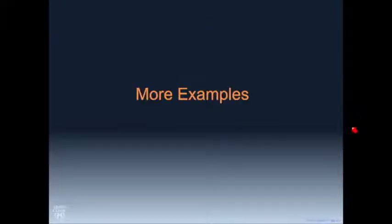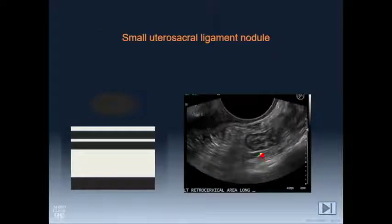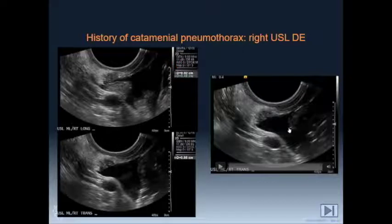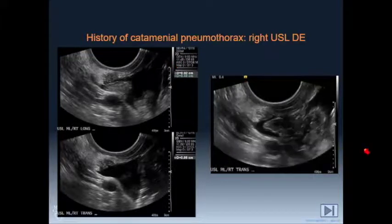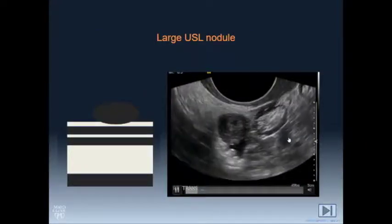I want to show as many examples as I can, because it's one thing to know how to do it, but if you don't know what it looks like it doesn't really help. We sometimes see superficial endometriosis, particularly if there's free fluid — the specificity of this sort of lesion is very high but the sensitivity is low. Here's another small nodule of the utero-sacral ligament — again, high specificity, relatively low sensitivity. This one is a very typical nodule of the utero-sacral ligament outlined by a little free fluid, over 5 millimeters in size. Here's a big utero-sacral ligament nodule; we're just showing that it's not attached to the bowel.